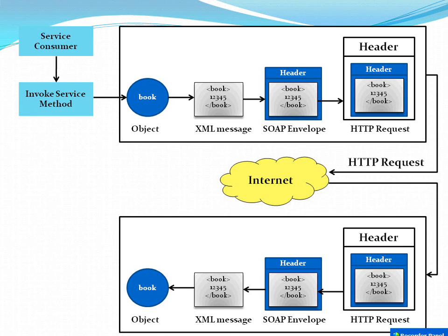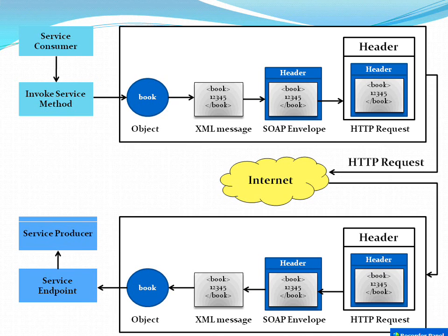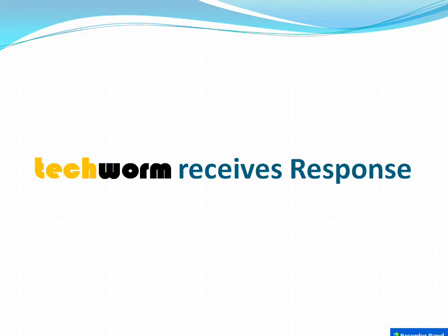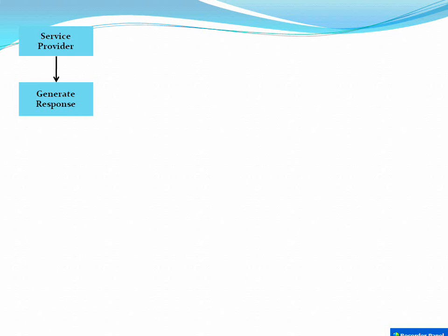The XML message is removed from the SOAP envelope, deserialized, and converted to a Java object — the request object — which contains the ISBN number. Once the ISBN number is received at the service endpoint, the real business logic is invoked and the book price is determined, for example one hundred dollars. The service provider then generates the response. The book prices are maintained in Amazon's database, the search happens, and the price is sent back to Techform.